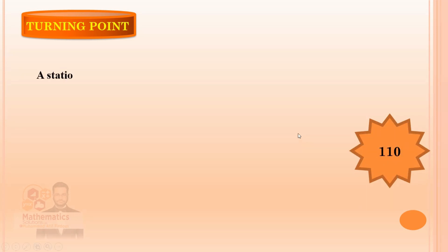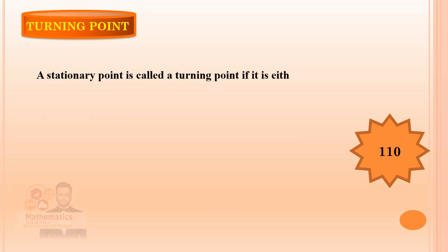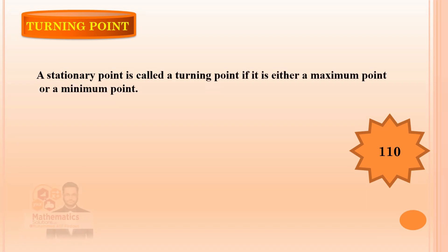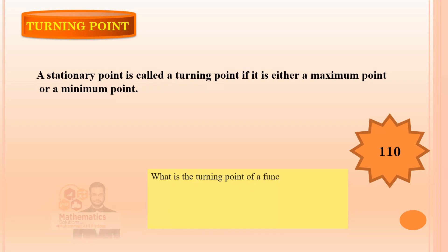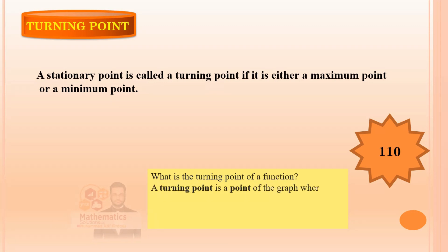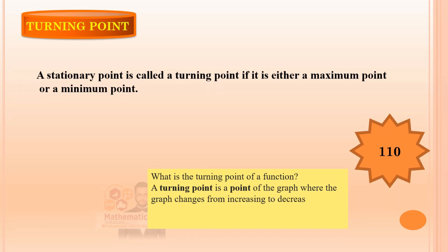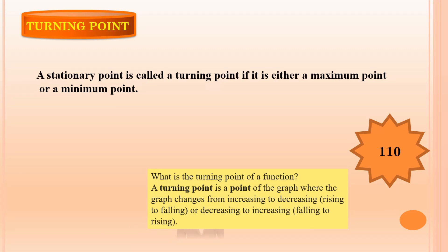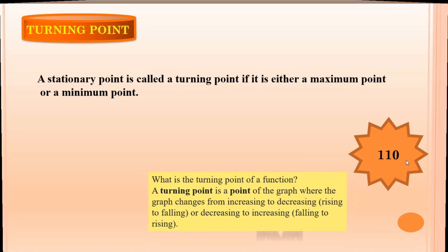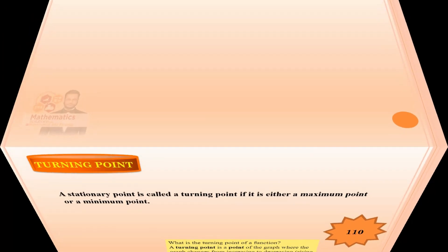Turning point definition: a stationary point is called a turning point if it is either a maximum or minimum. A turning point is where the graph changes from increasing to decreasing, or decreasing to increasing — that is, from rising to falling or falling to rising.